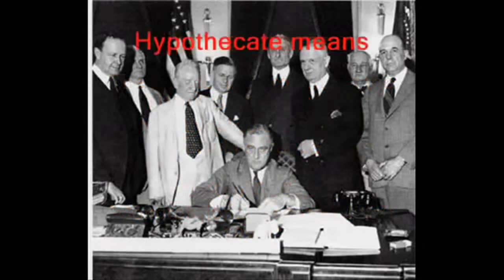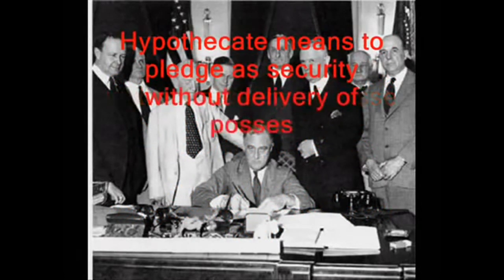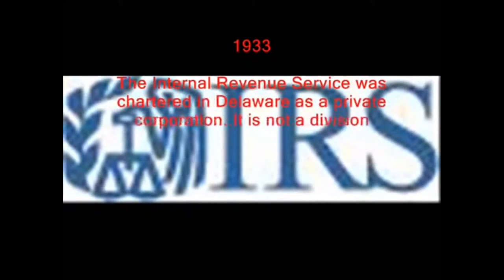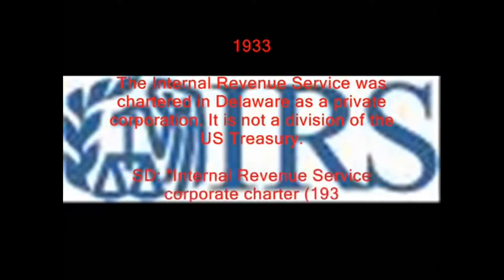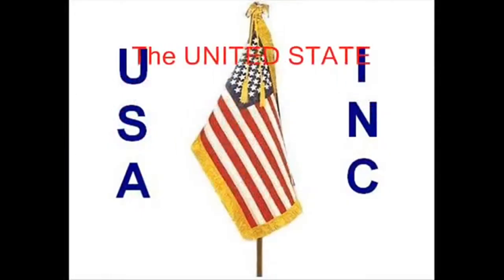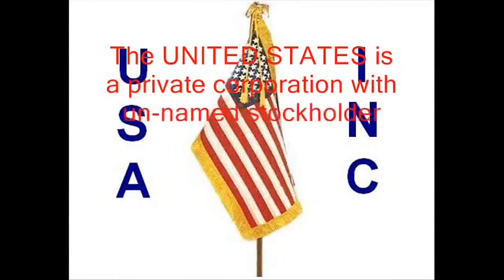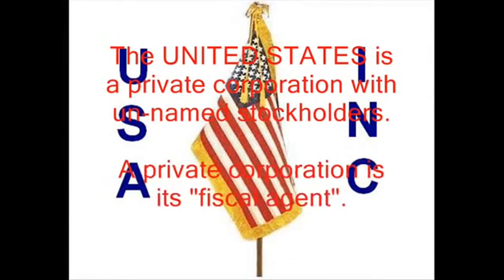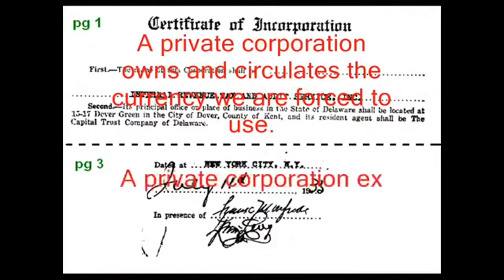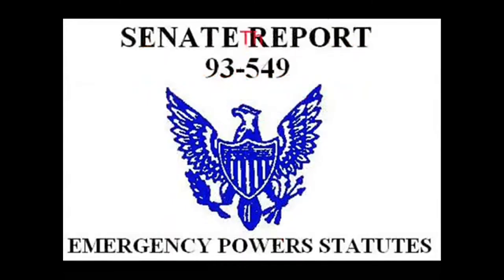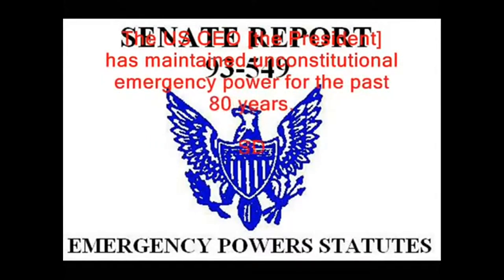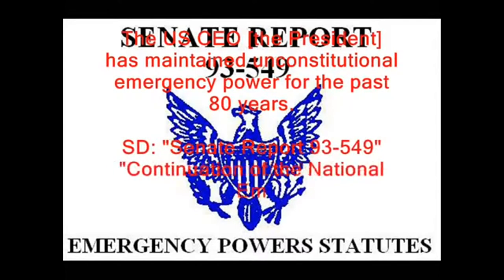1933: The Internal Revenue Service was chartered in Delaware as a private corporation. It is not a division of the U.S. Treasury. Source document: Internal Revenue Service Corporate Charter, 1933. The United States is a private corporation with unnamed stockholders. A private corporation is its fiscal agent. A private corporation owns and circulates the currency we are forced to use. A private corporation expects us to pay them taxes. The U.S. CEO — the President — has maintained unconstitutional emergency powers for the past 80 years. Source document: Senate Report 93-549.